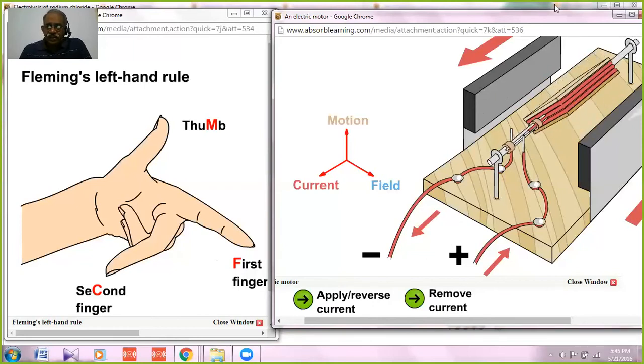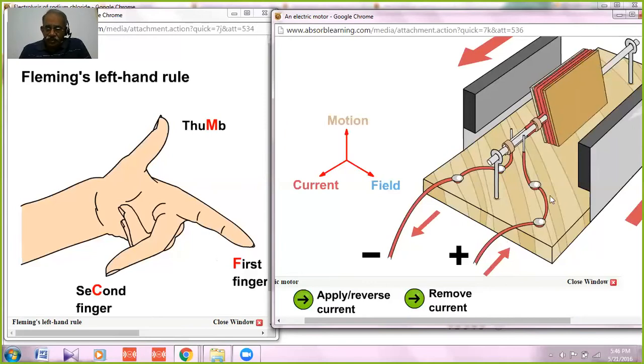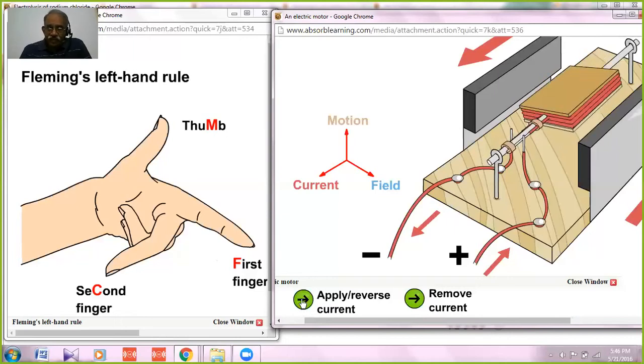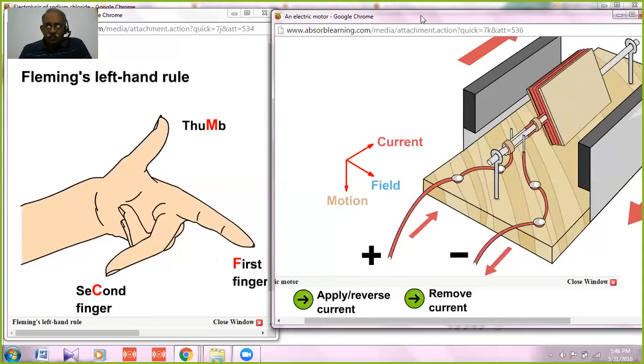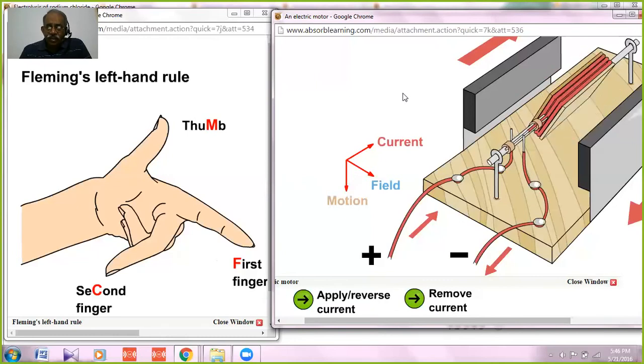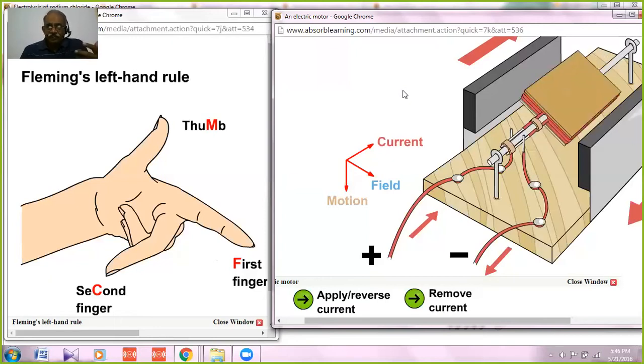See it goes, and then now what happens when you reverse the current? When you reverse the current you will see that the deflection will be in the opposite direction. So we apply, now you see the same rule follows—Fleming's left hand rule—which explains the motion of the electric conductor will be along the direction of the thumb.